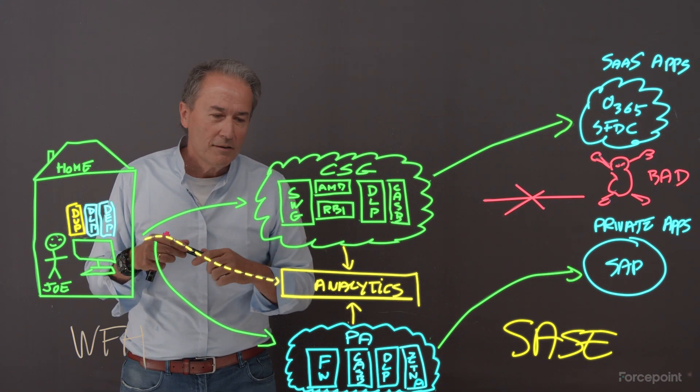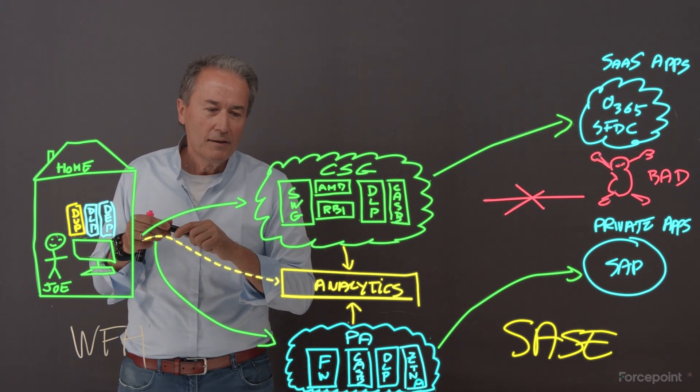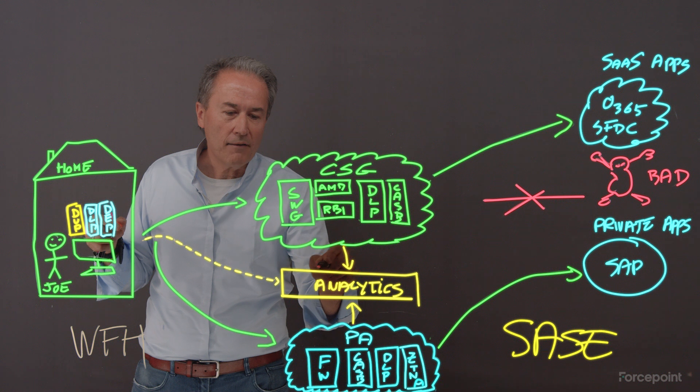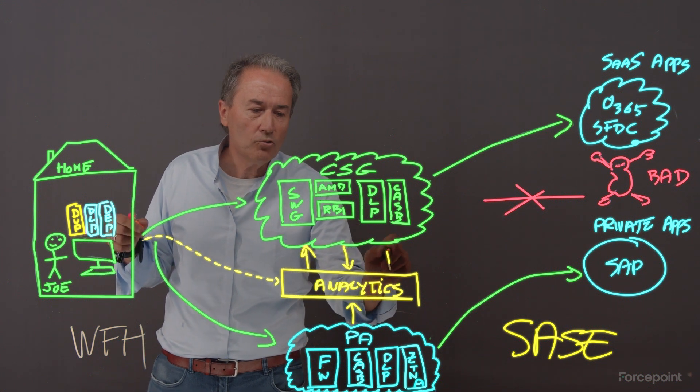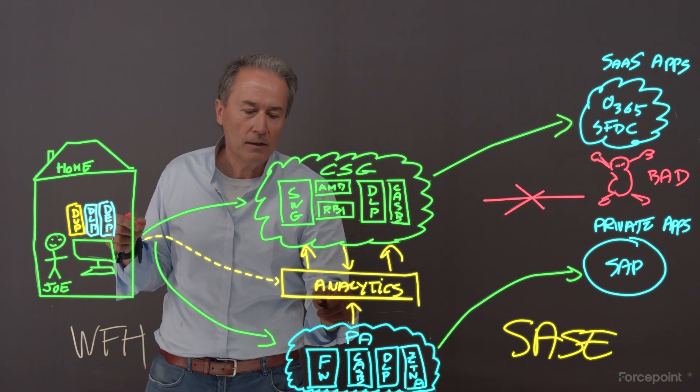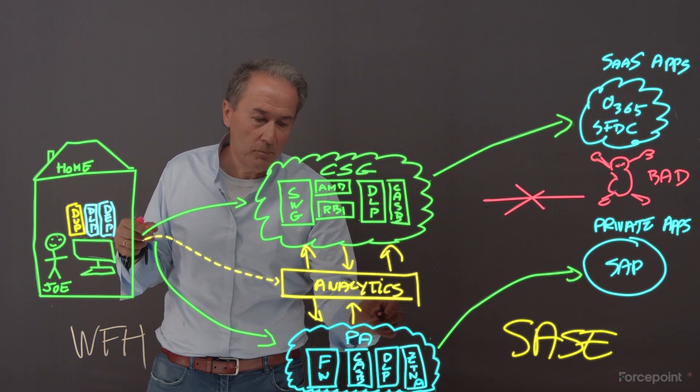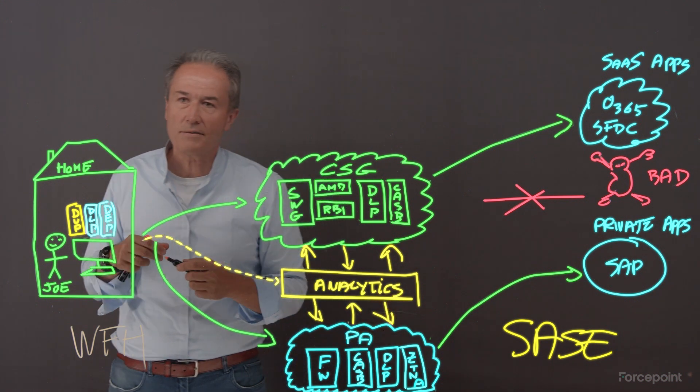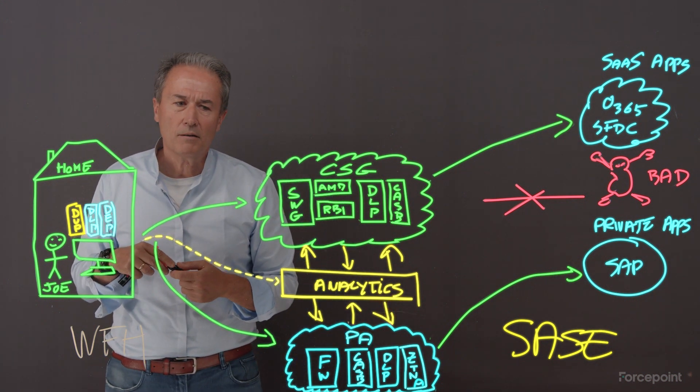What if we took the risk and use it to drive all the control points in the cloud security gateway? All the control points in the private access? What does it mean? Well, I'll give you an example.